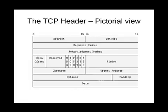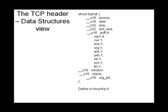Similarly, this is how the TCP header looks: source port, destination port, sequence number, acknowledgement number, flags, window, checksum, and so on. This is how it maps onto a data structure defined in tcp.h. We've encountered this in the sniffer tutorial — this is just a recapitulation.